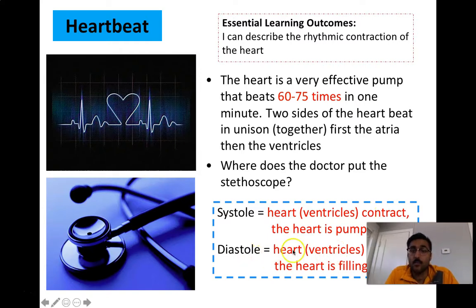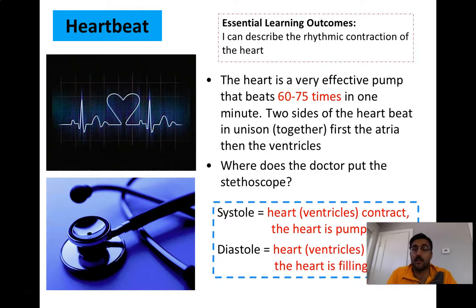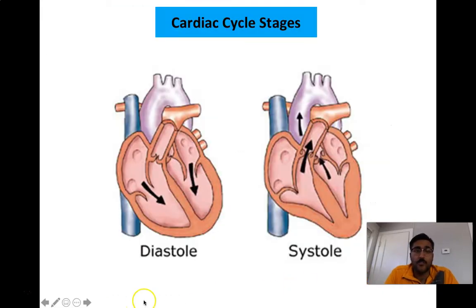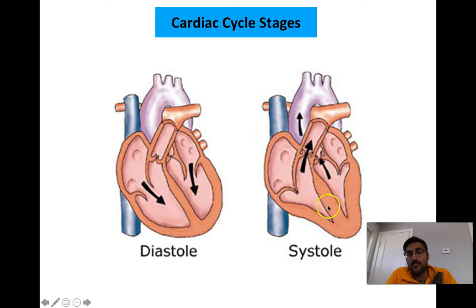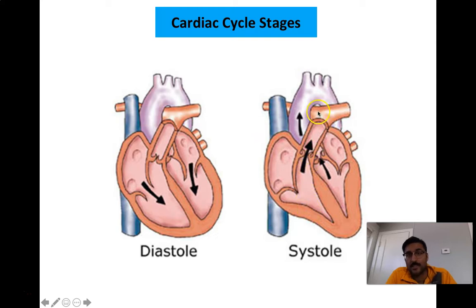Diastole is when the heart, more specifically the ventricles, are going to relax. The heart starts to fill because the blood in the atria — left and right atrium — starts to enter the heart. So in diastole, the ventricles are relaxed and they fill. Then in systole, the ventricles are contracting, the AV valves are shut, the semilunar valves are open, and blood is leaving — either from the right side to the pulmonary circulation or from the left side to the aortic systemic body circulation.